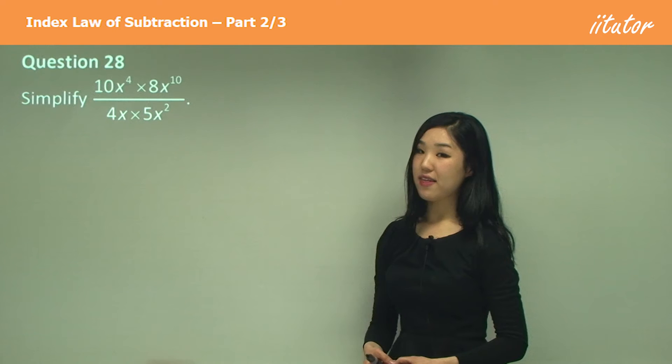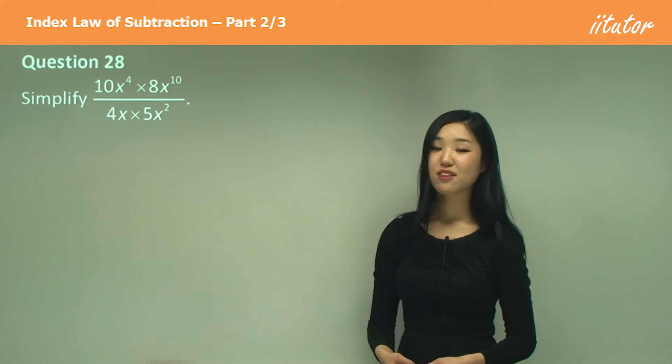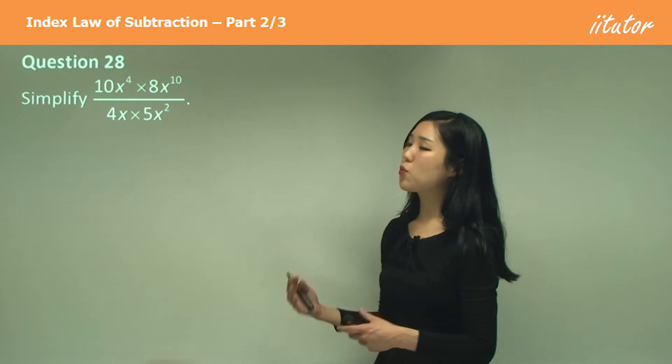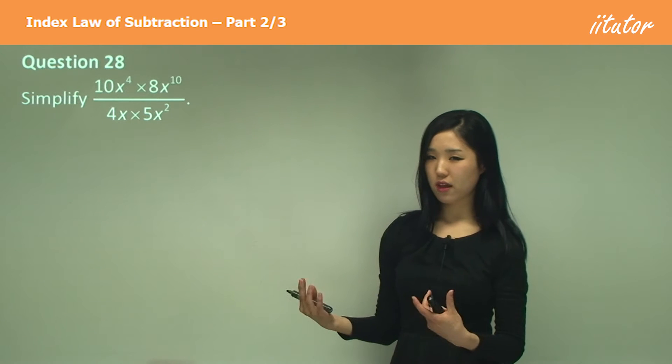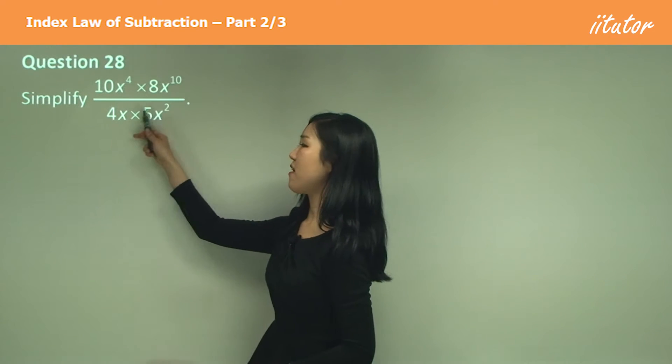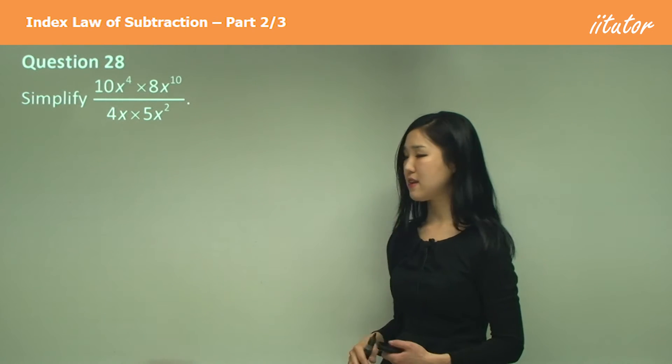We want to simplify this. This time we have a fraction. What does a fraction mean? The fraction means to divide. When we divide, I will subtract the indices. But we're doing this one by one because it's not just something divided by something. It's something times something divided by something times something. I'm going to keep this in a step-by-step process.